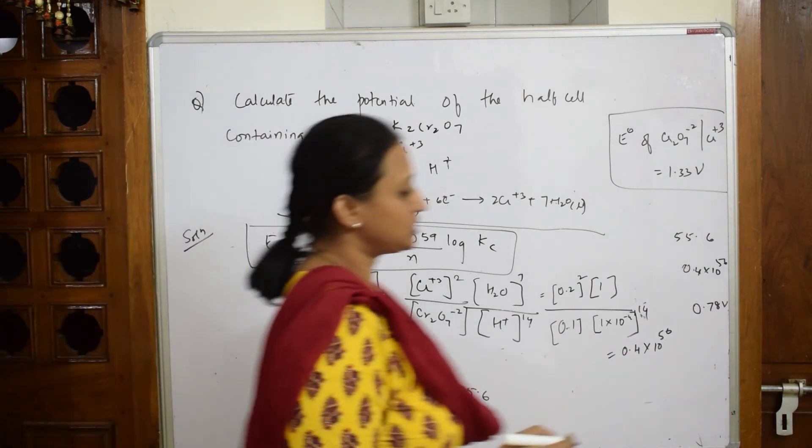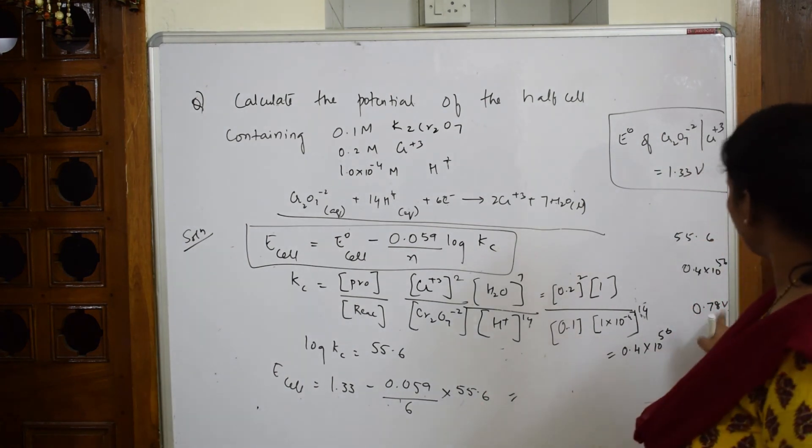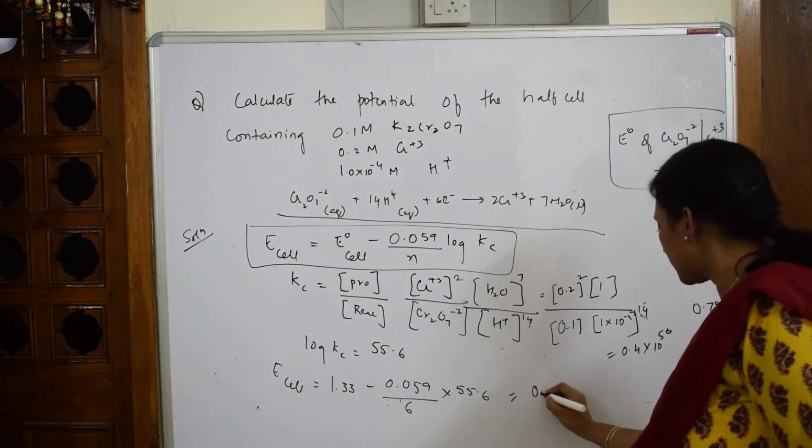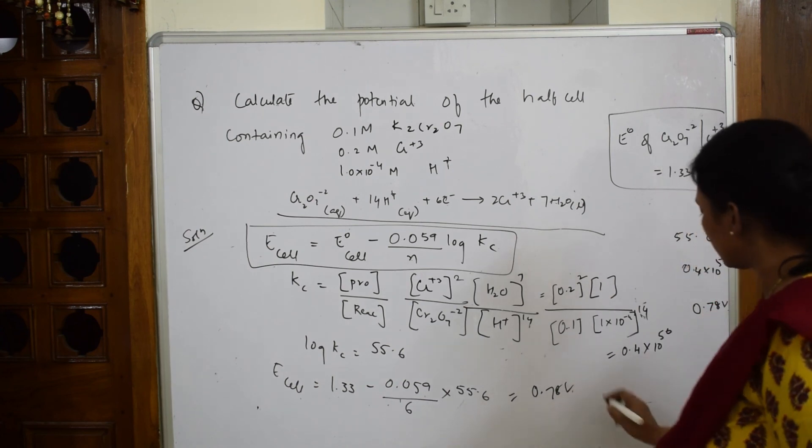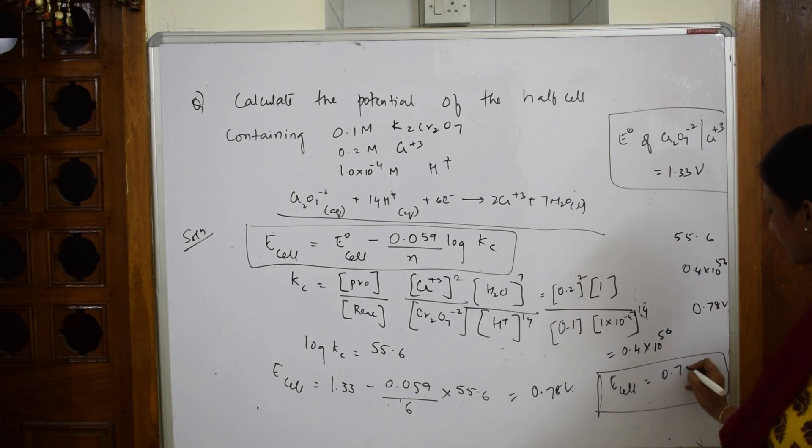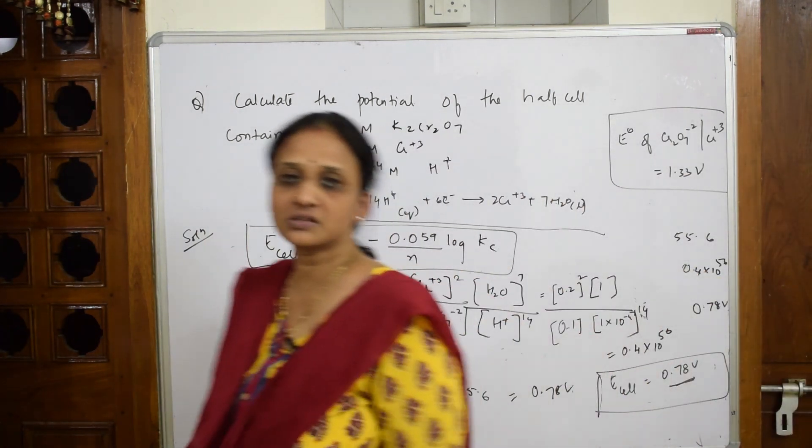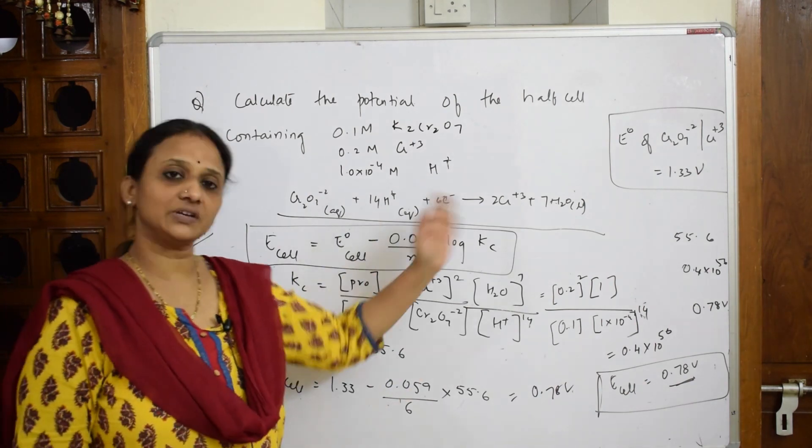And finally when I solve this whole concept, the whole answer, I get an answer of 0.78 volts. So hopefully you write, you put a box like this and write E cell = 0.78 volts. That is your potential of the given cell or potential of the given reaction.